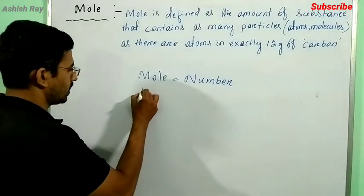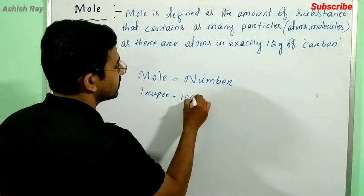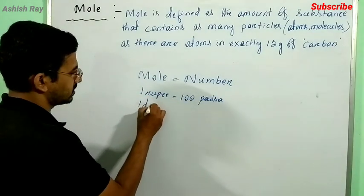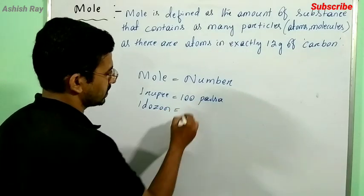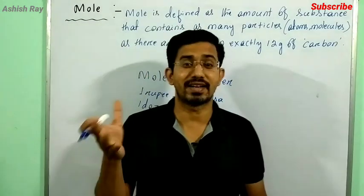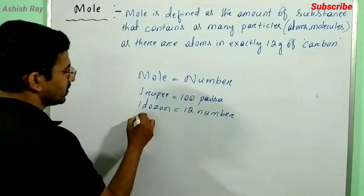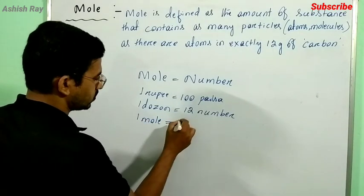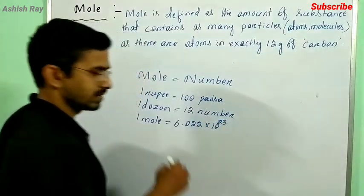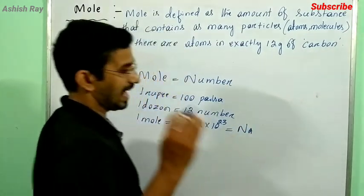We say one rupee is equal to one hundred paisa, or we can say one dozen is equal to twelve. If you go to the market and ask for one dozen bananas, they give you twelve bananas. Similarly, one mole is equal to 6.022 into 10 to the power 23.